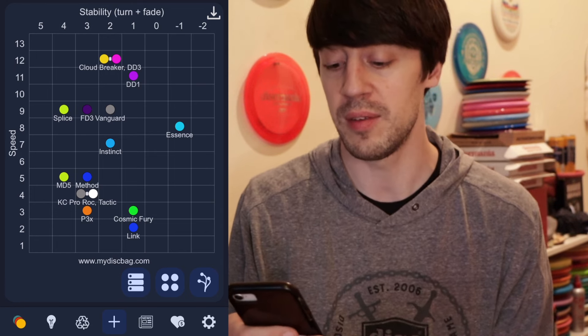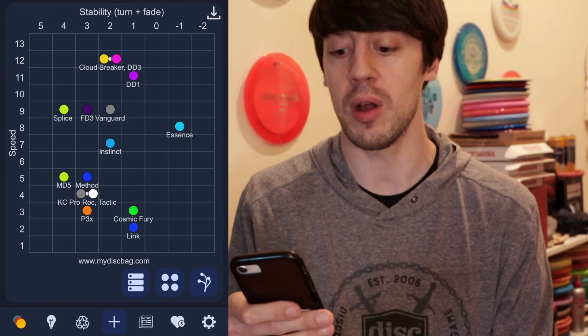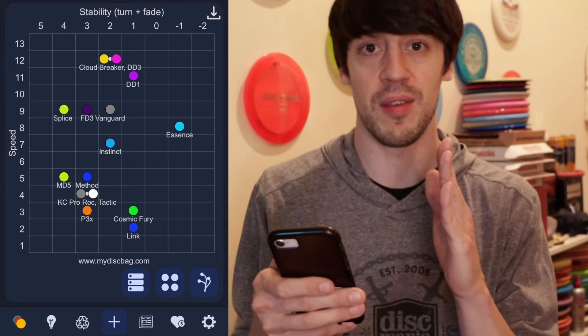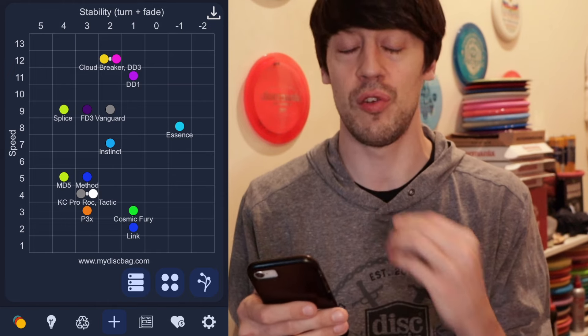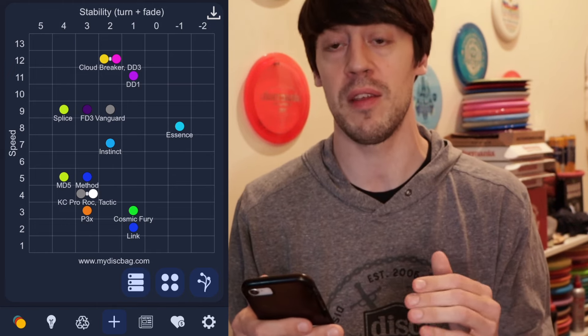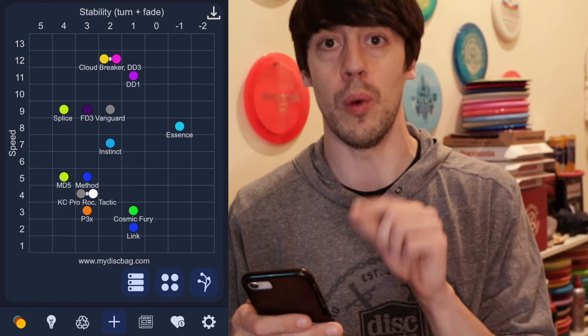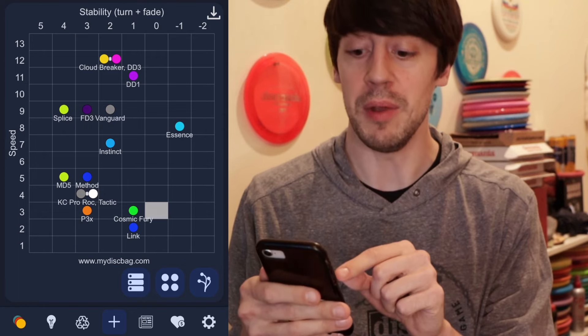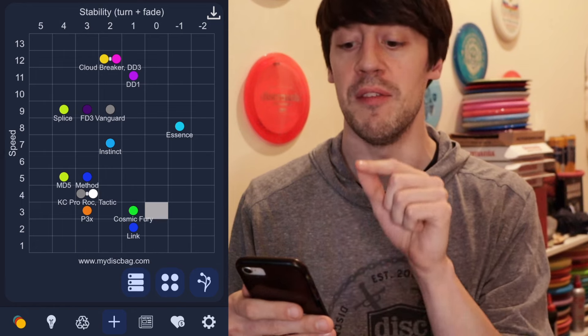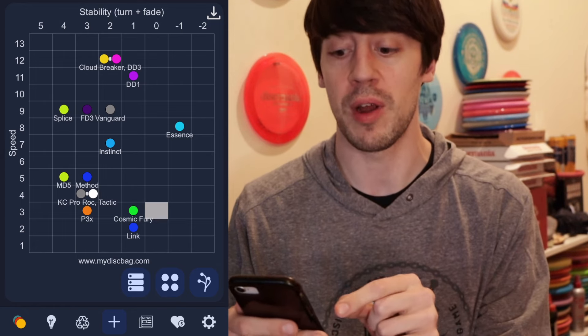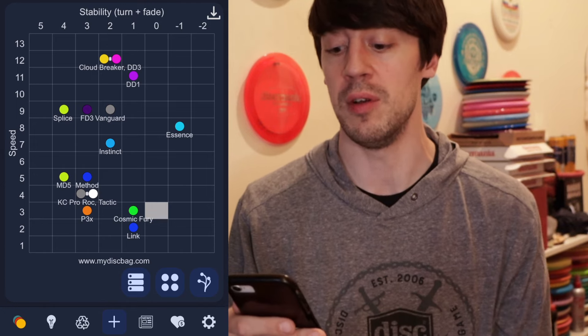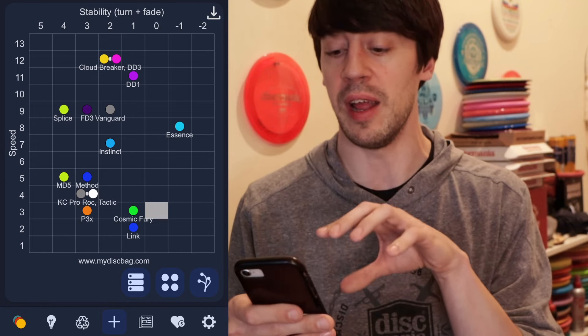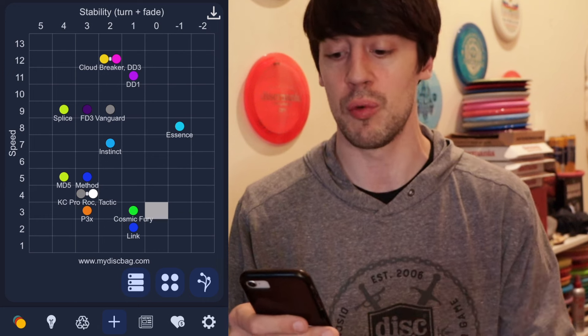I do have a couple discs and you can see the KC Pro Rock down there on the left is actually considered overstable. But my personal KC Pro Rock is actually super beaten in and super flippy at this point. So I might be able to show you a way to change that. You can see that I have an MD5 as an overstable mid-range. I have a Splice as an overstable fairway driver. I have my Cloudbreaker, my DD3, my DD1 as my distance drivers. It just gives you a really clear and definite way to see your bag visually.